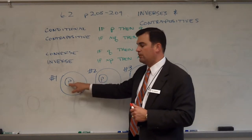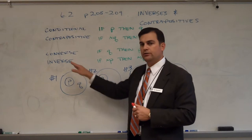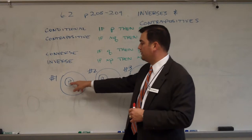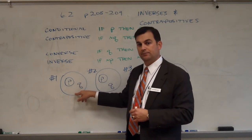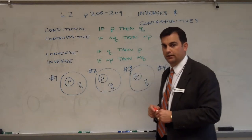So P would represent all persons who are runners, and Q would represent the larger group of people who are also athletes. Anyone who is a runner is definitely an athlete, but it is possible to be an athlete and not necessarily be a runner.